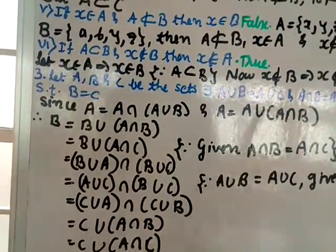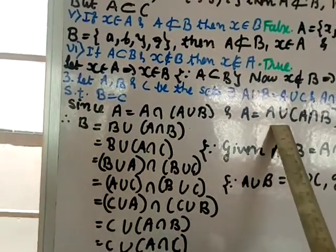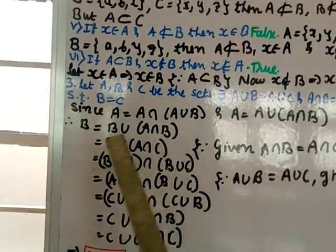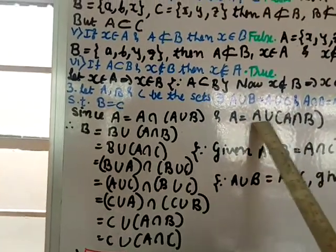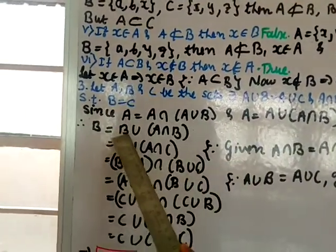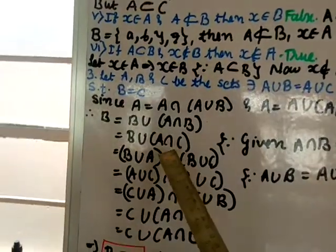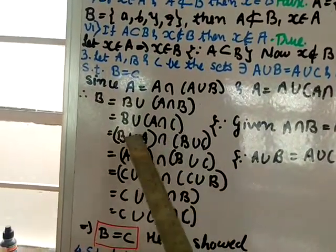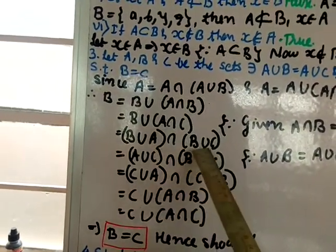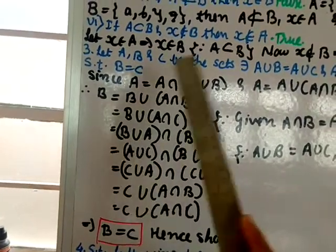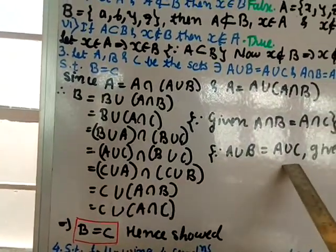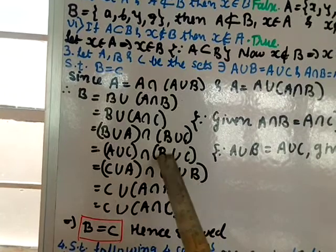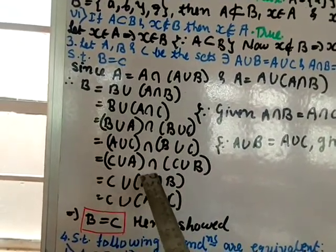Using the first property, write B = B ∪ (A ∩ B). Since A ∩ B = A ∩ C (given), replace to get B = B ∪ (A ∩ C). Opening the bracket: B = (B ∪ A) ∩ (B ∪ C). Since A ∪ B = A ∪ C (given), replace: B = (A ∪ C) ∩ (B ∪ C).